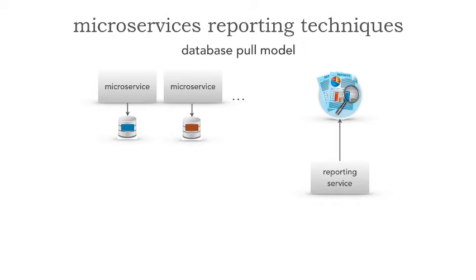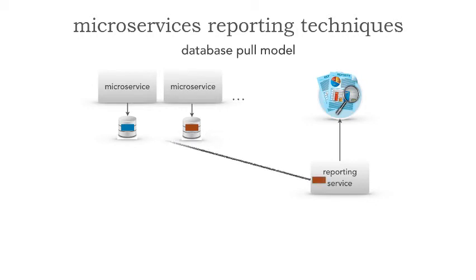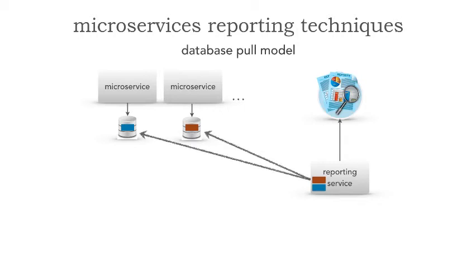This looks great from an operational or a transactional standpoint, but what about reporting? Let me show you three different patterns of doing reporting within microservices, because where does the data reside? Well, it resides in each individual schema or each individual database. So the point is for the database pull model — if the data is in the database, from a reporting perspective, just go and grab the data.